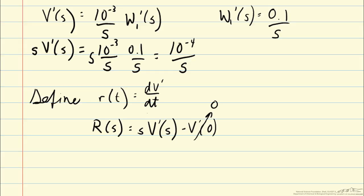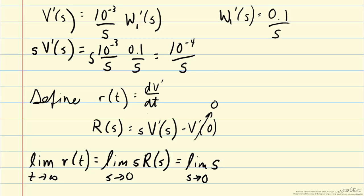Now we can apply the final value theorem to the rate r. So limit as t goes to infinity of r(t) is equal to the limit as s goes to 0 of s times r(s). So that is equal to the limit as s goes to 0 of s times r(s), which is s times V prime of s, 10 to the minus 4 over s squared.